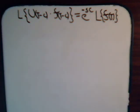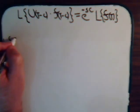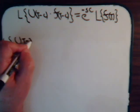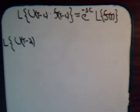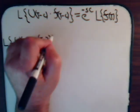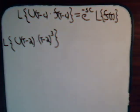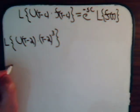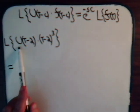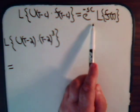Let's use this now to solve some straightforward problems. Suppose we have the Laplace transform of u(t-2) times (t-2) cubed, and we want to know what the Laplace transform is. Now, this part of the formula here corresponds to this part of the formula.